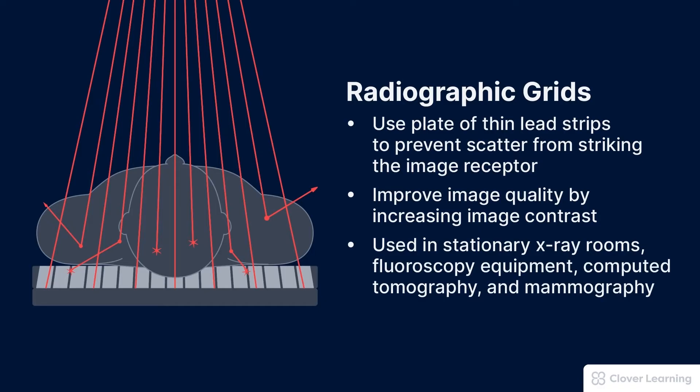Several types of x-ray imaging equipment use grids, including stationary x-ray rooms, fluoroscopy equipment, computed tomography, and mammography.